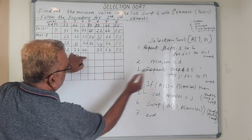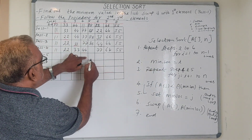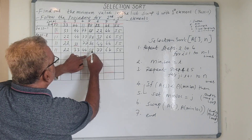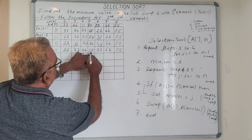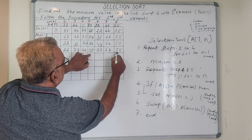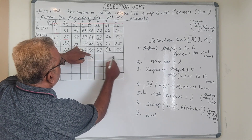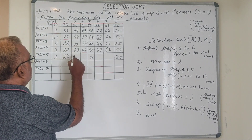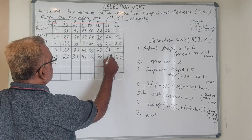Now i equals 5. We check from the fifth element to find the minimum value. The minimum value is 55. So 55 and 88 are swapped. Remaining elements: 11, 22, 33, 44, then 77 and 66.